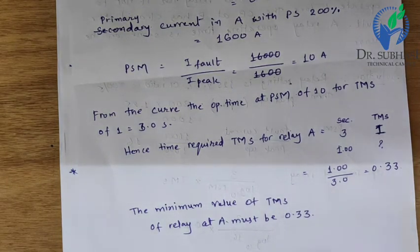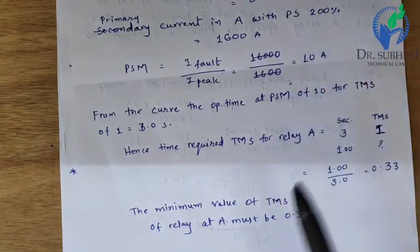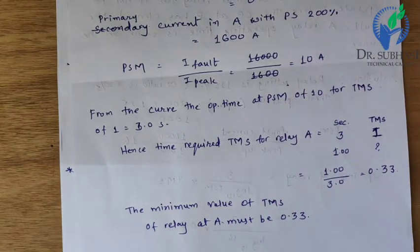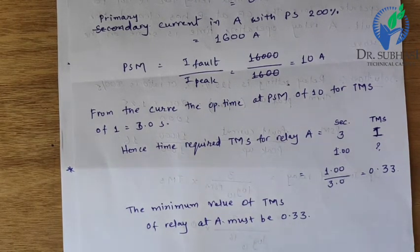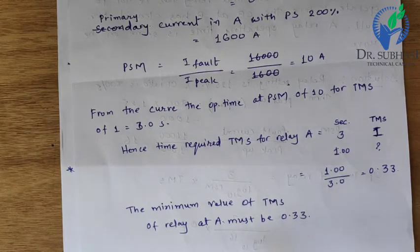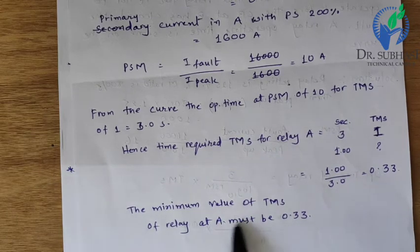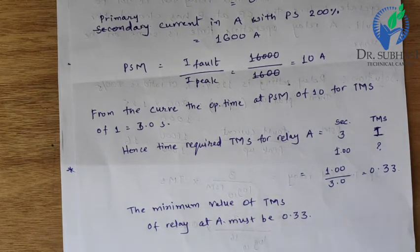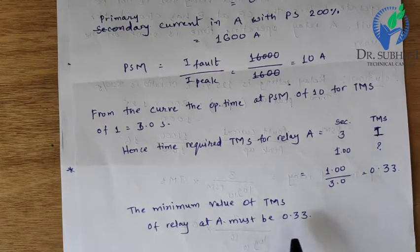In conclusion, relay B will operate in 0.5 seconds and after the discrimination time, relay A will reset. If relay B does not operate due to malfunctioning, relay A will operate after the discrimination time, giving relay A an operating time of 1 second with TMS of 0.33.